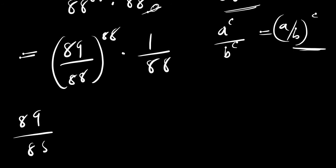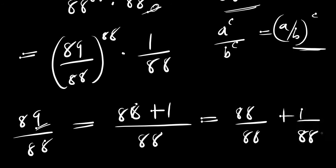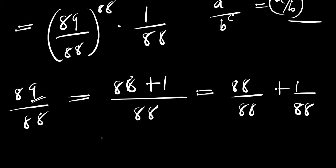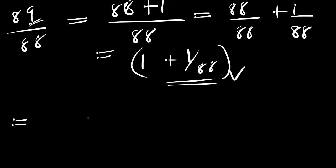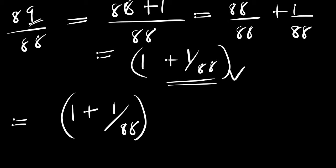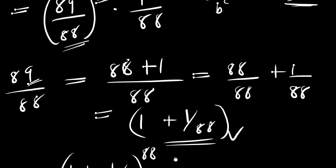Now, 89 divided by 88 can be written as (88 + 1) divided by 88, which equals 1 plus 1/88. We replace 89/88 with (1 + 1/88), so the expression becomes (1 + 1/88) raised to the power of 88, times 1 over 88.